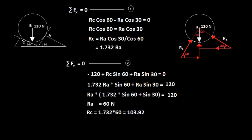This is a typical problem in forces and reactions analysis. A body of mass 120 Newton is resting on two planes — one inclined at 60 degrees to the horizontal and the other inclined at 30 degrees to the horizontal.